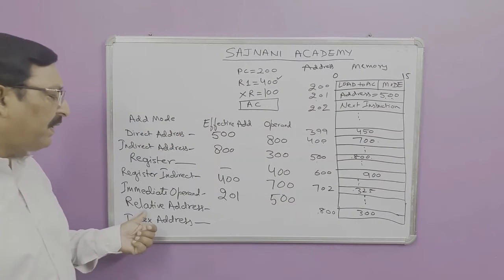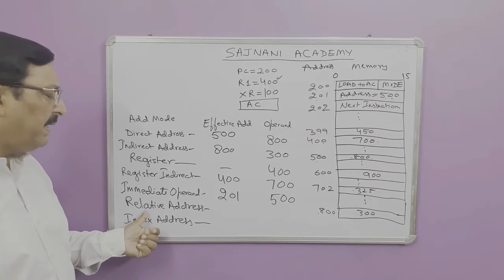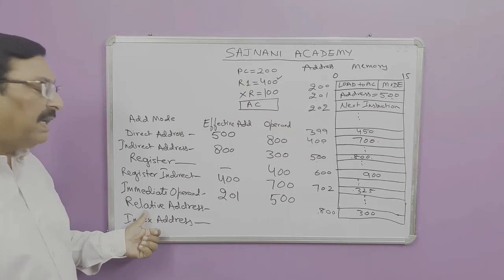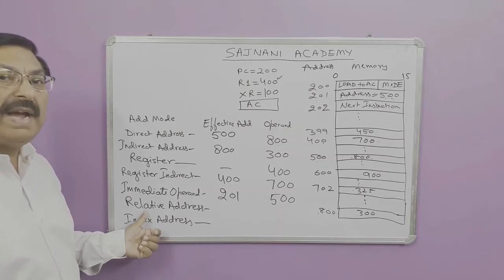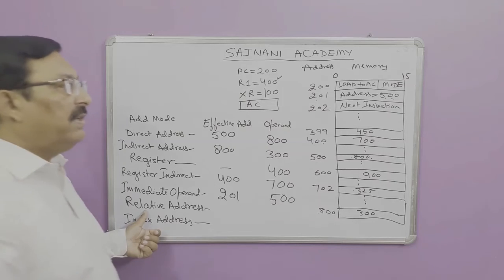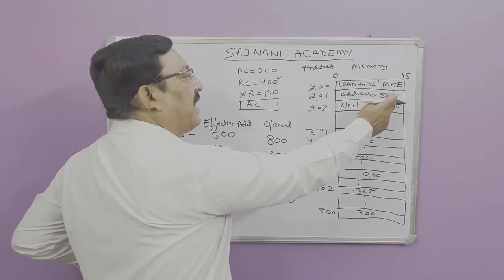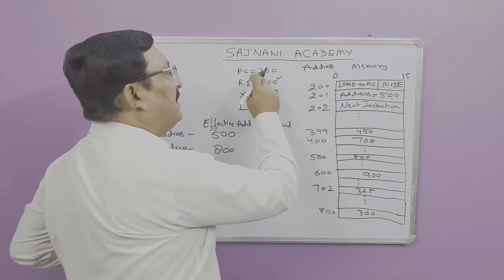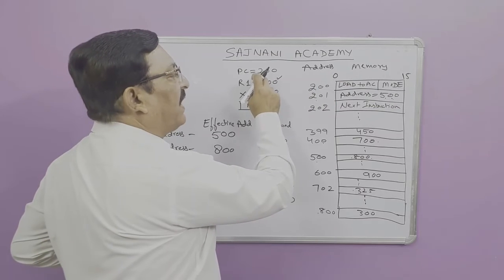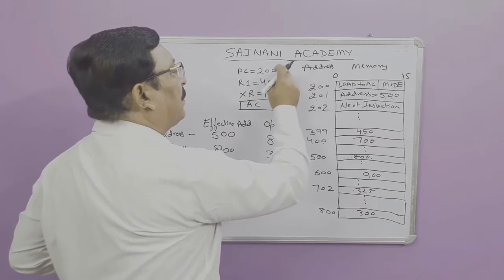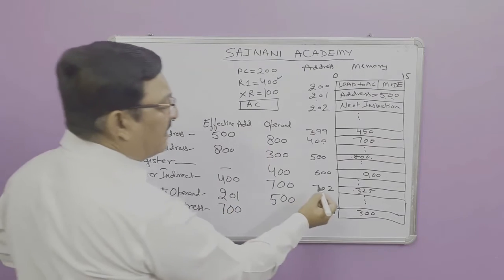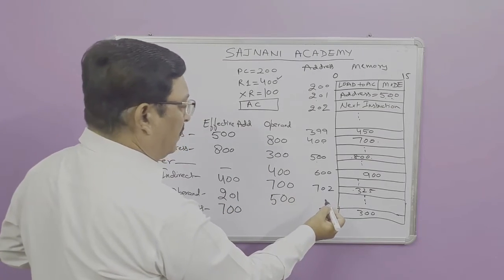In relative addressing mode, the content of the PC is added to the address mentioned in the instruction. The instruction gives address 500, and we add the content of PC which is 200, so the effective address would be 500 plus 200 equals 700.